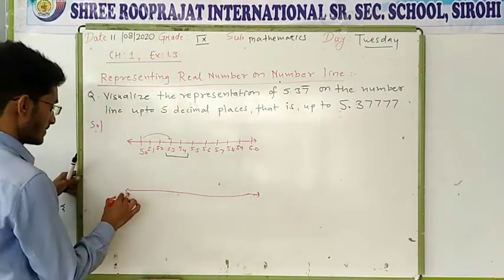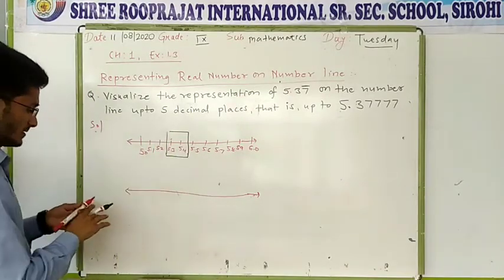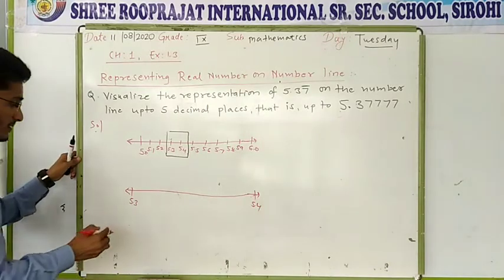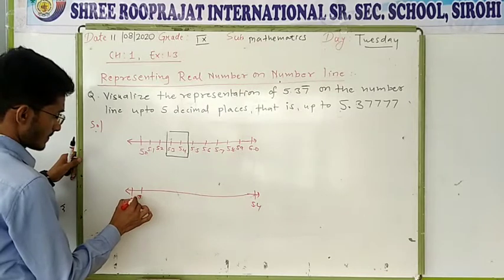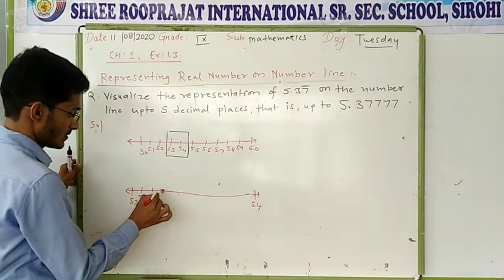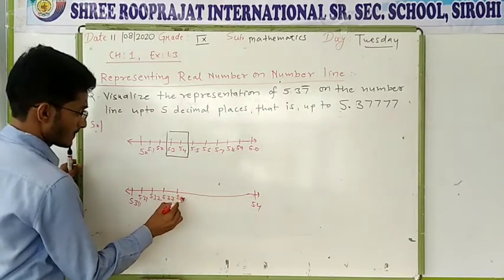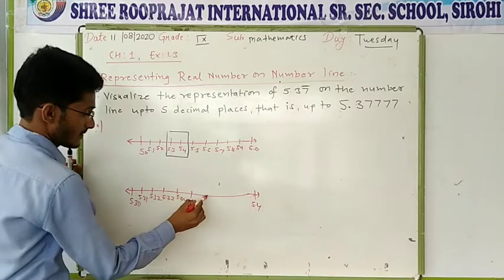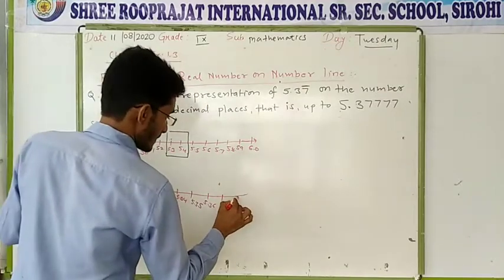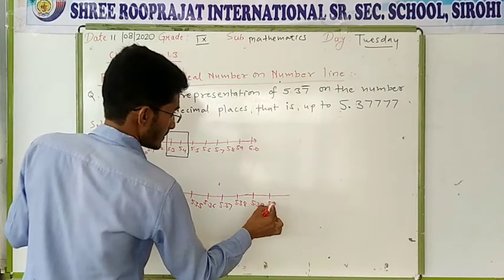Our number is in between 5.3 and 5.4. So now we will zoom that part only. Suppose there is 5.3 and 5.4. After 5.3 there will be 5.31, 5.32, 5.33, 5.34, 5.35, 5.36, 5.37, 5.38, 5.39, and 5.4. So after zooming 5.3 to 5.4 we can locate 5.37.